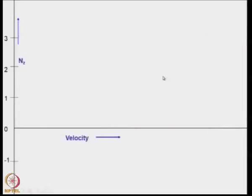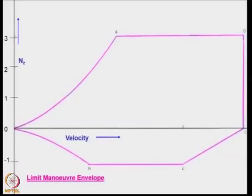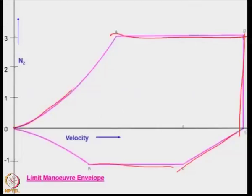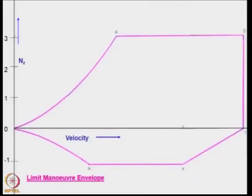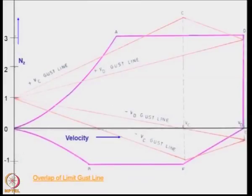This is the limit gust line. The limit maneuver envelope was obtained earlier by specifying the limits on the upper and lower maximum values, the design diving speed, the cut provided as I mentioned, and this corresponds to the CL max, both positive and negative. What you are getting here is basically the limit envelope in which the aircraft can be maneuvered. On this particular graph, we have to superimpose the loading that can be created because of the additional load factor due to the gusts. When you superimpose, we notice that there are certain areas which are beyond the limit maneuver envelope.